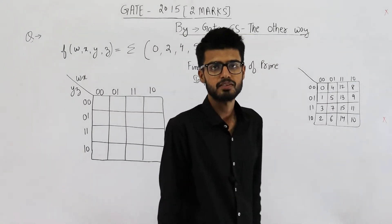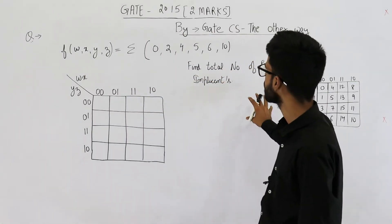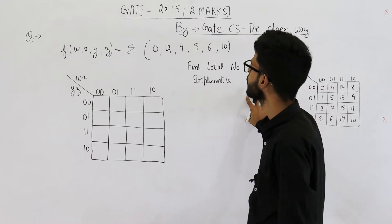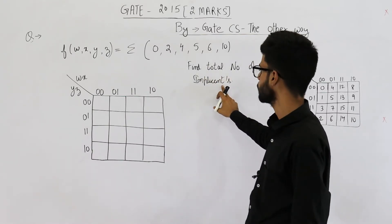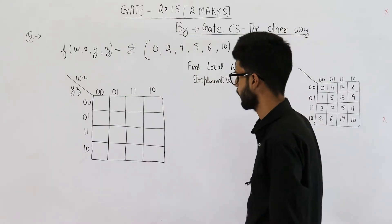Hello there students, welcome back. So this question is from GATE 2010-15 exam, it's for two marks. They are saying find the total number of prime implicants in this function f.